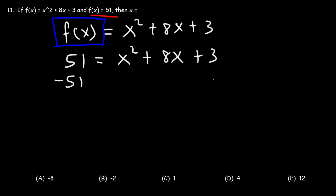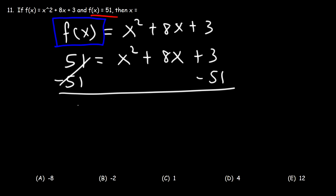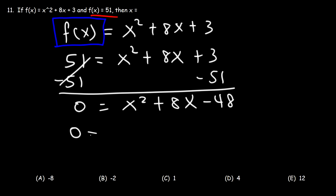Now let's subtract both sides by 51. So we're going to get 0 is equal to x squared plus 8x, and 3 minus 51 is negative 48. What we have is a quadratic equation in the form ax squared plus bx plus c. The constant term c is negative 48, b is 8, and the leading coefficient a is 1.